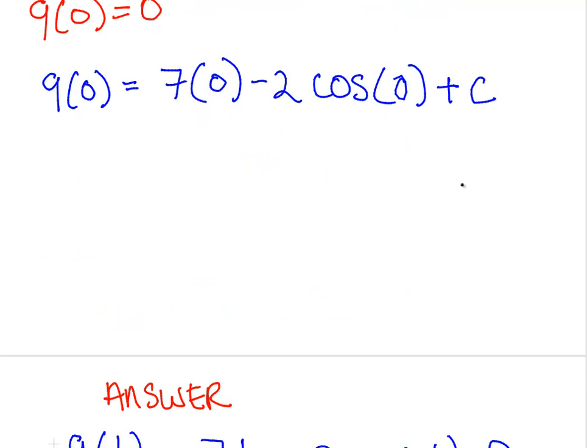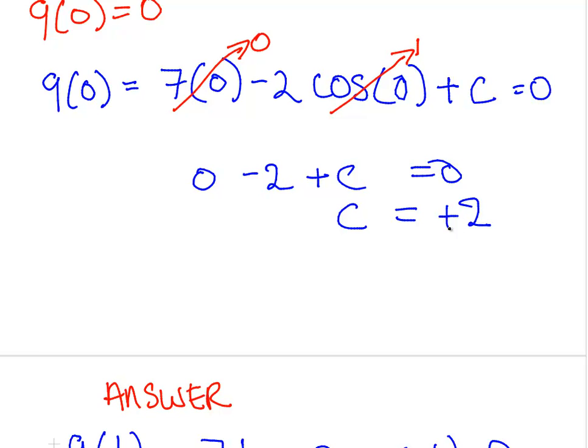So q of 0 equals 7 times 0 minus 2 times cos of 2, 0 is just 0, plus C. Let's just simplify that, 7 times 0 minus 2 cos of 0. Just be careful here, cos of 0 is actually 1, not 0. So what we have is, and all of that is equal to 0. So what we have here is 0 minus 2 plus C is equal to 0. So, necessarily, C is equal to plus 2.